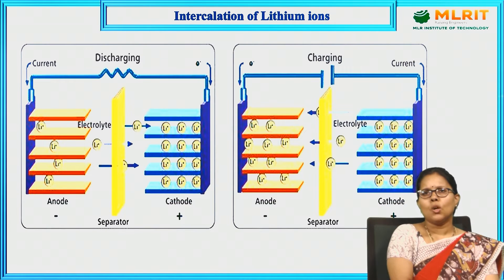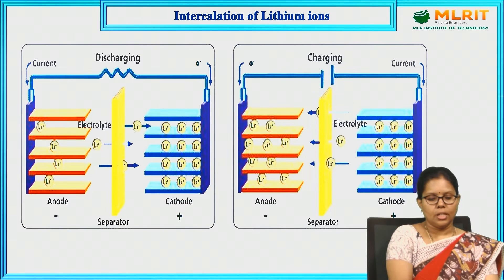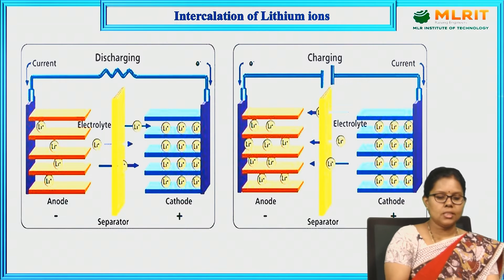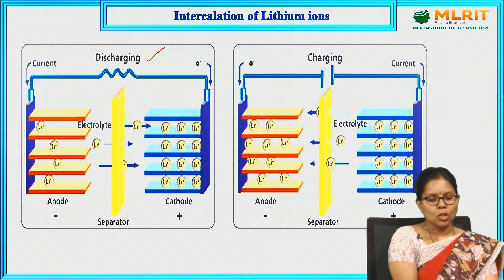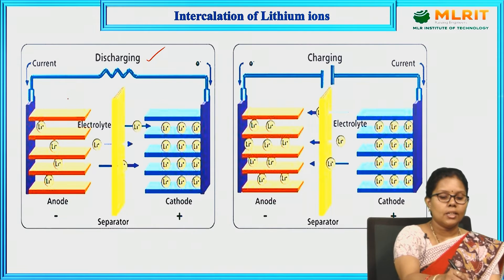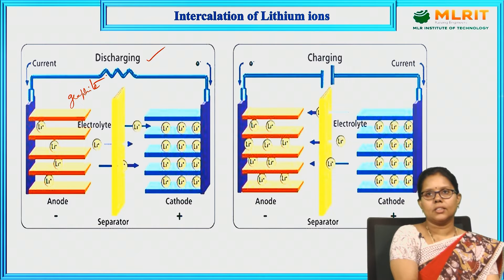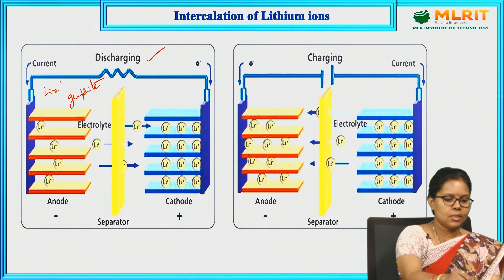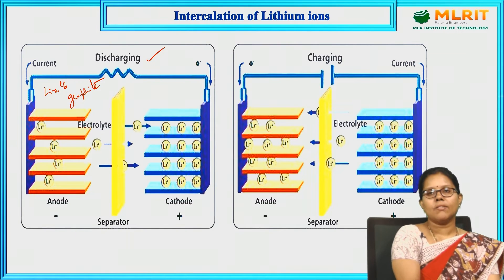Let us look at the pictorial representation of intercalation of lithium ions. Intercalation means the incorporation of lithium ions into the free lattice sites of the lattice structure. Looking at the anode during discharging, these are the graphite layers — layers of graphite doped with lithium, LixC6. During discharging, lithium ions and electrons are generated from these graphite layers.